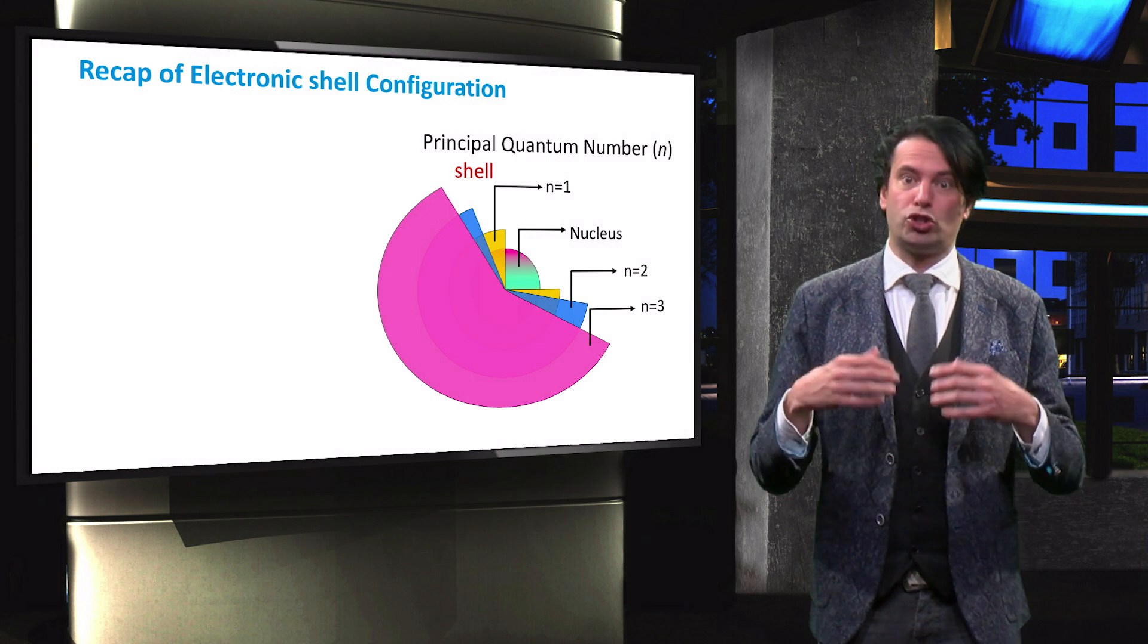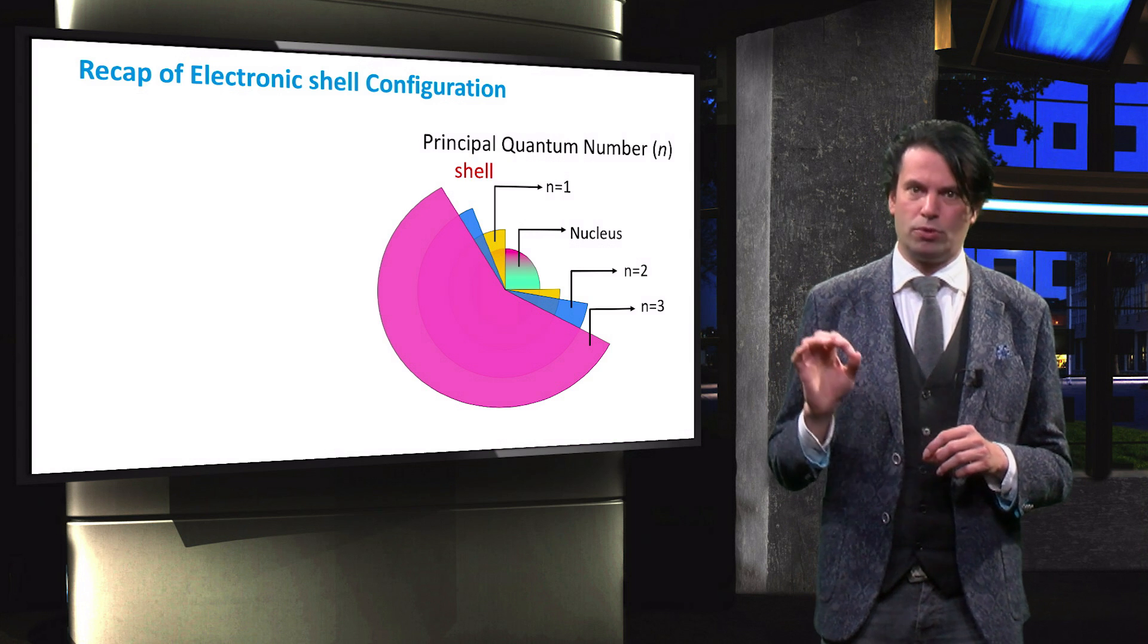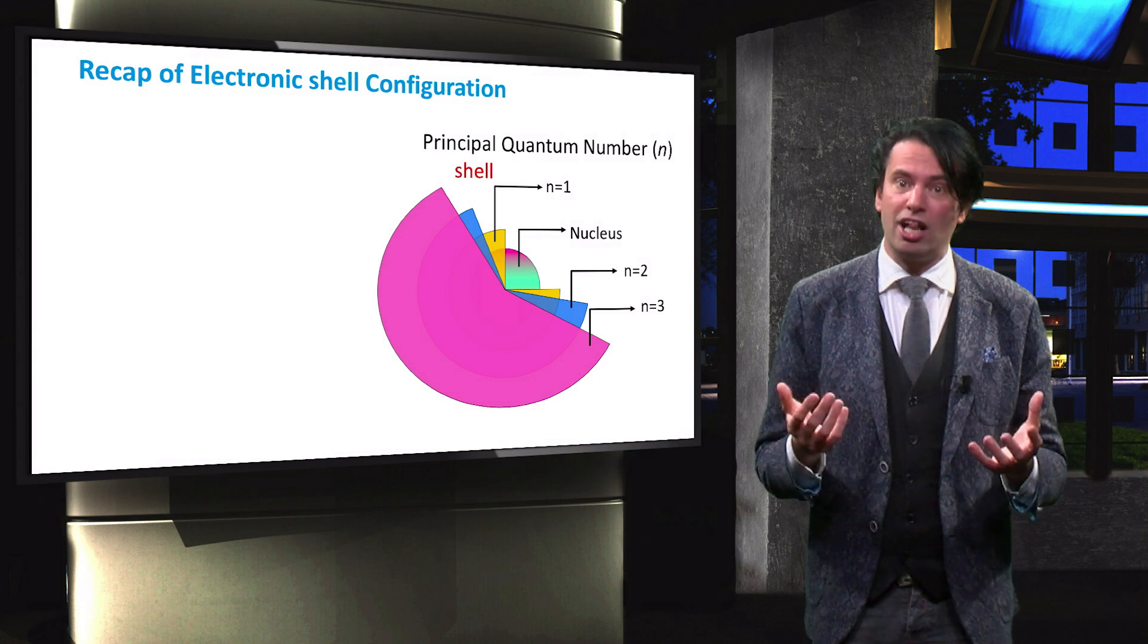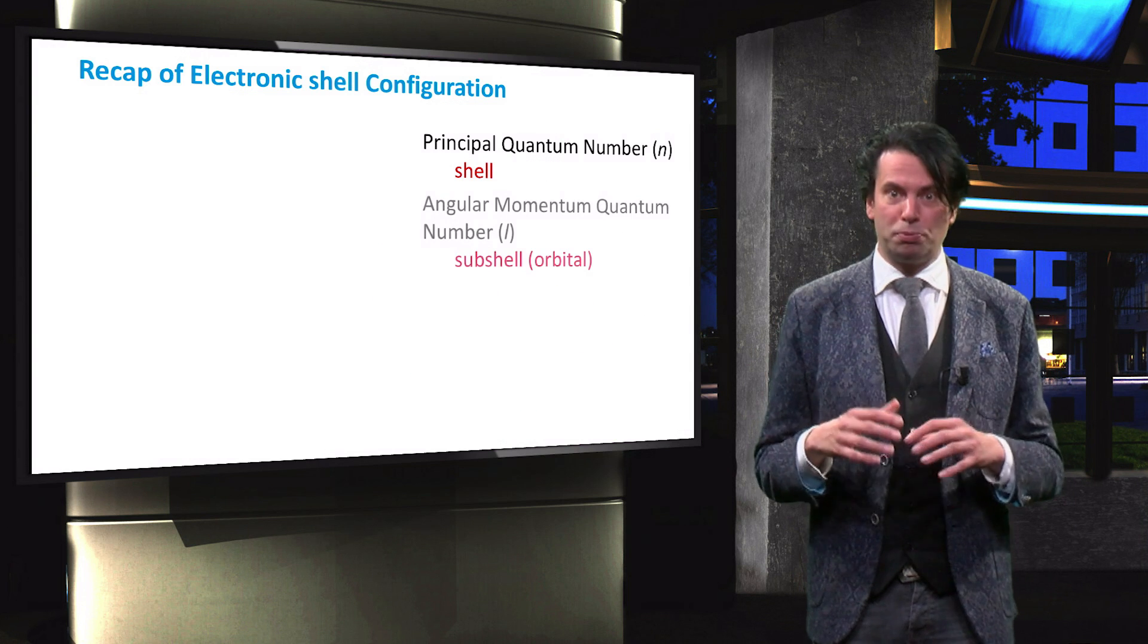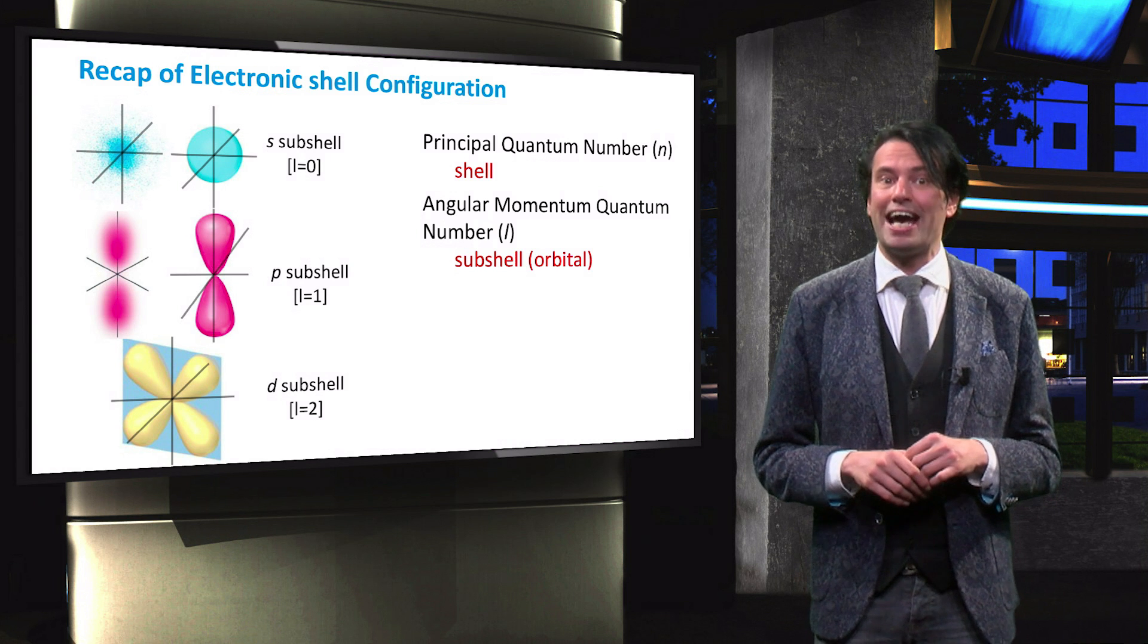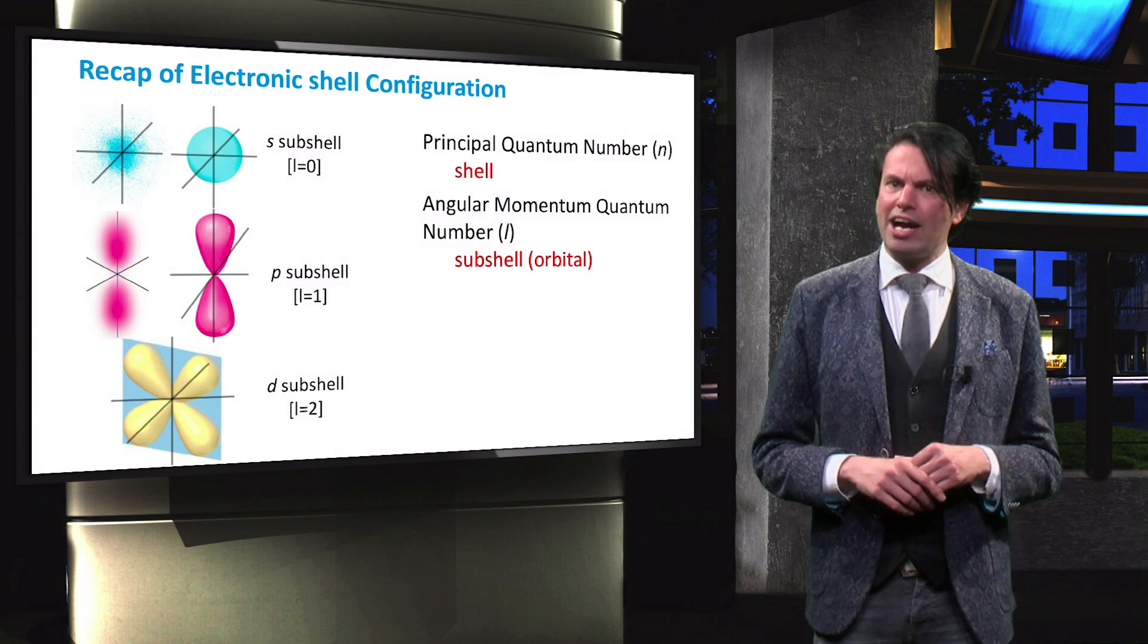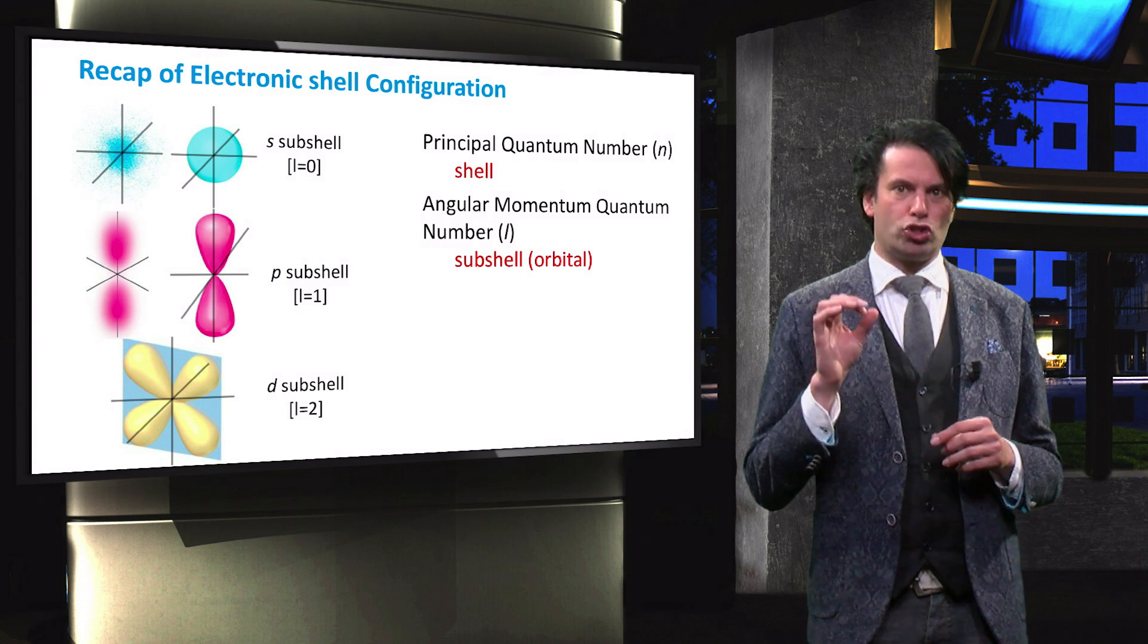The number of sub-shells is equal to its principal quantum number. For example, the second energy shell has two sub-shells. The first three sub-shells, with an angular momentum number 0, 1, and 2, correspond to the s, p and d orbitals. We can see that the angular momentum number defines the shape of the orbitals in each sub-shell.